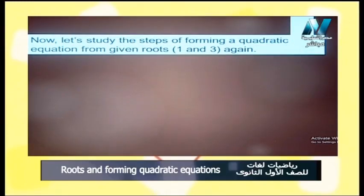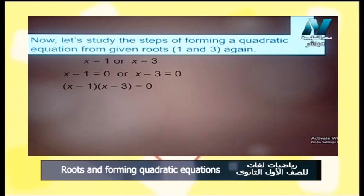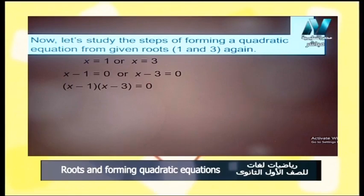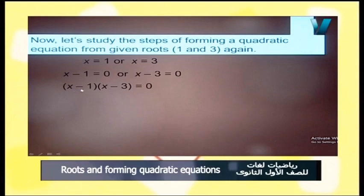Now let's study the steps of forming a quadratic equation from given roots 1 and 3. We have x equals 1 and x equals 3 as the two roots of the quadratic equation. So x minus 1 equals 0 or x minus 3 equals 0, giving us x minus 1 multiplied by x minus 3 equals 0.